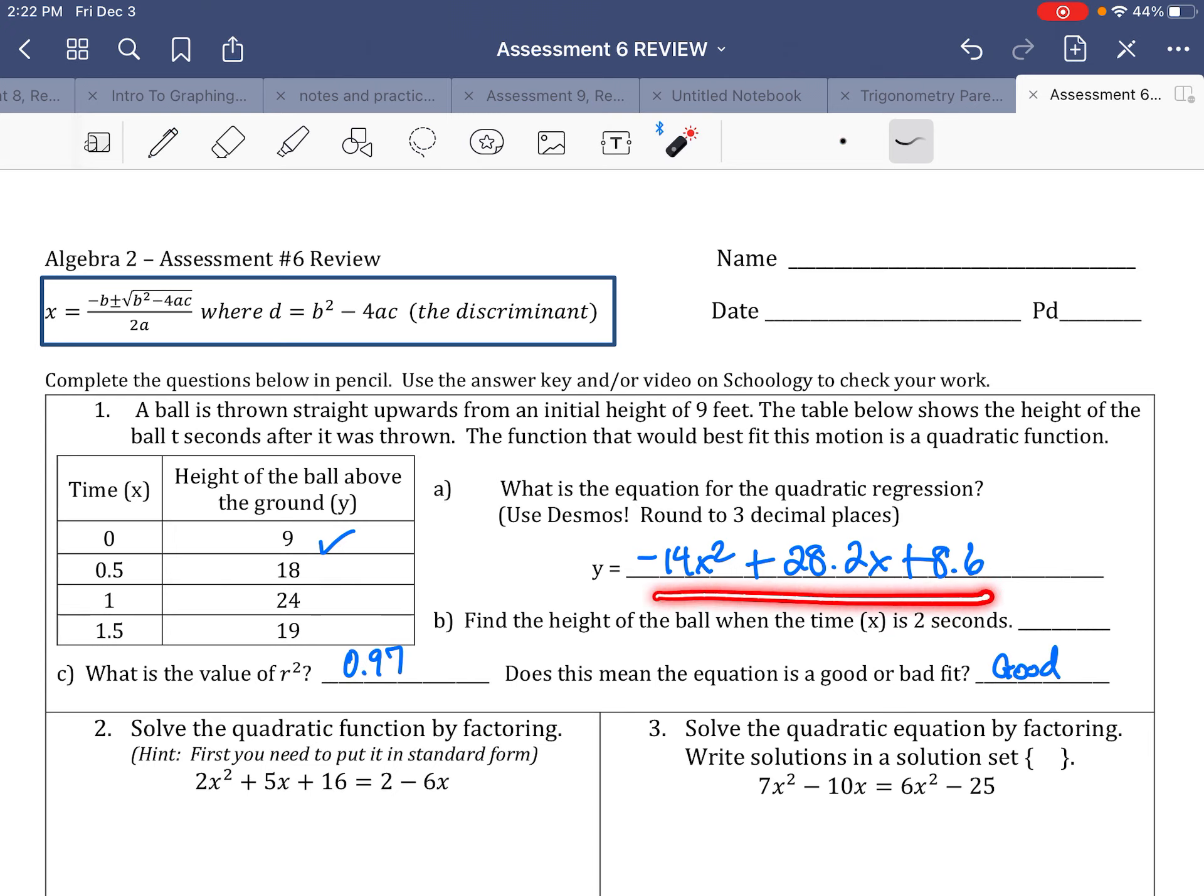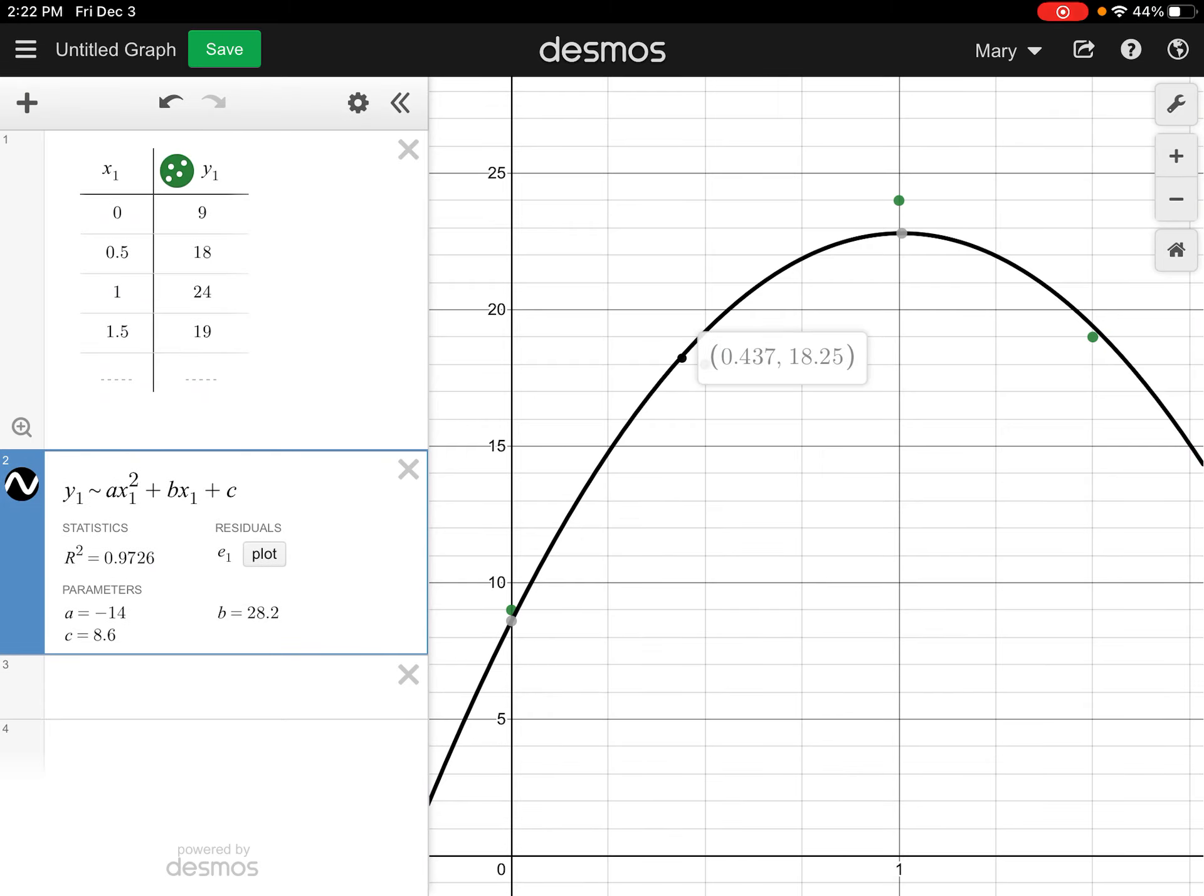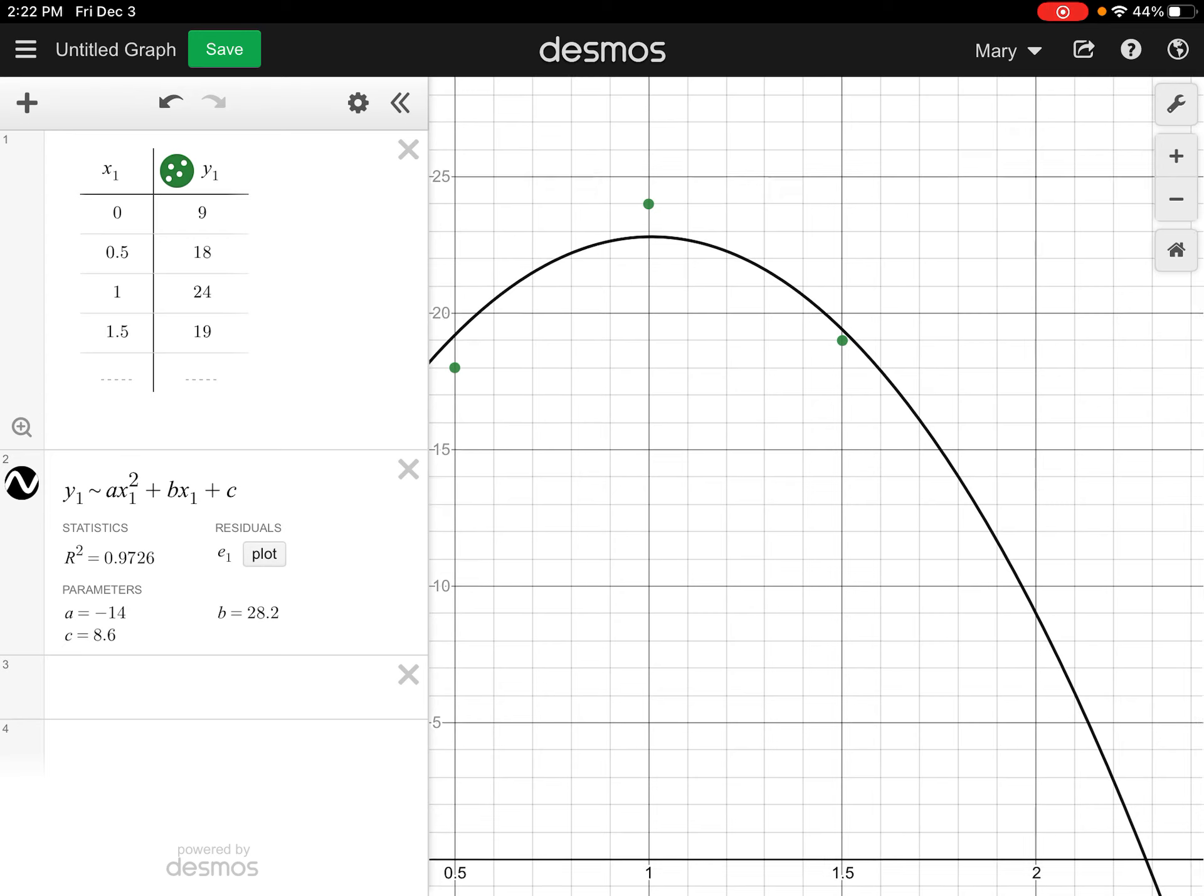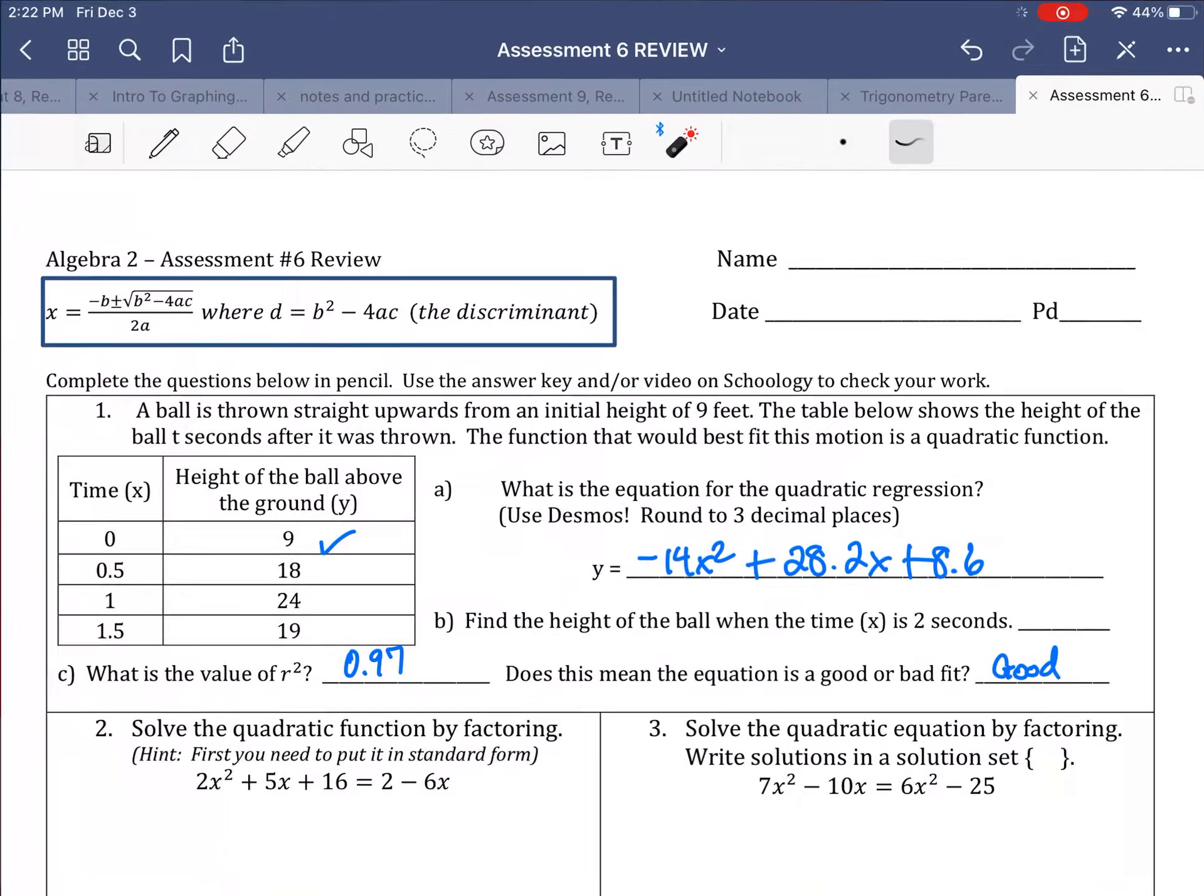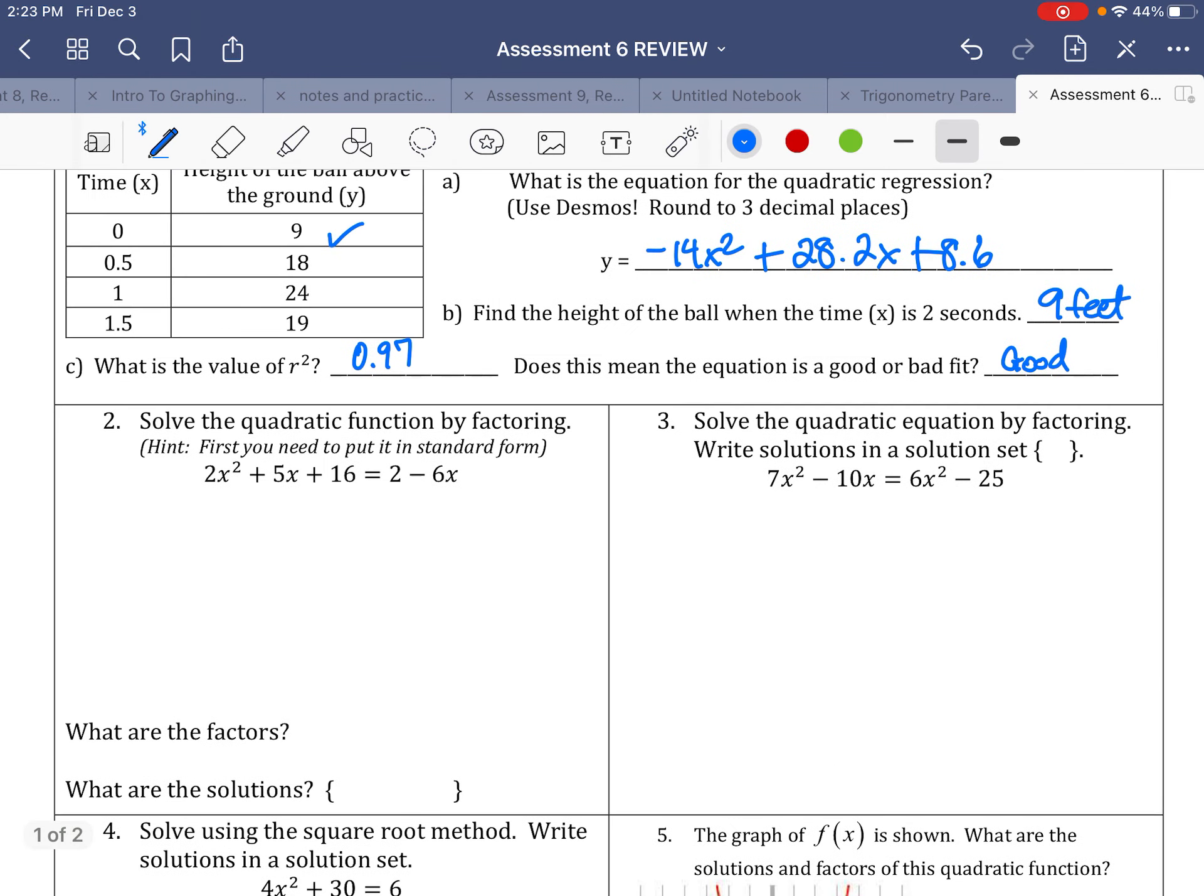Find the height of the ball when X is 2 seconds. So you could do one of two things. You could type this in your calculator, and for these X's right here and right here, you could use the number 2. Or you could use your graph. The reason you did this, so we can go along here and go until the X value is 2. When you got a 2 right there, 2 looks like it was 9. So 9 looks like it's in feet.